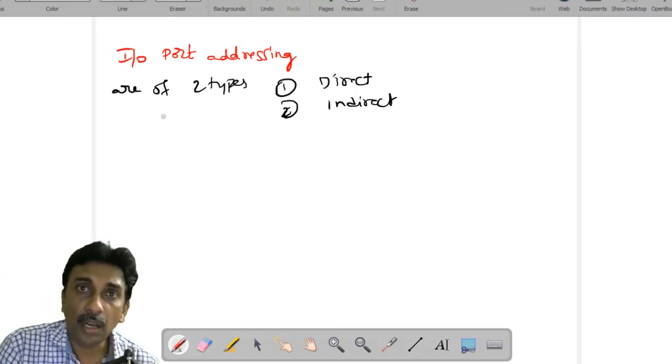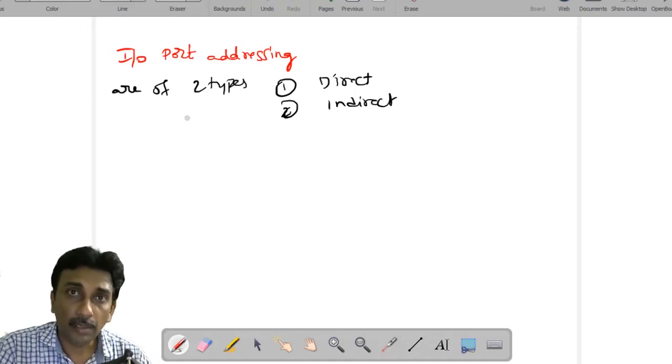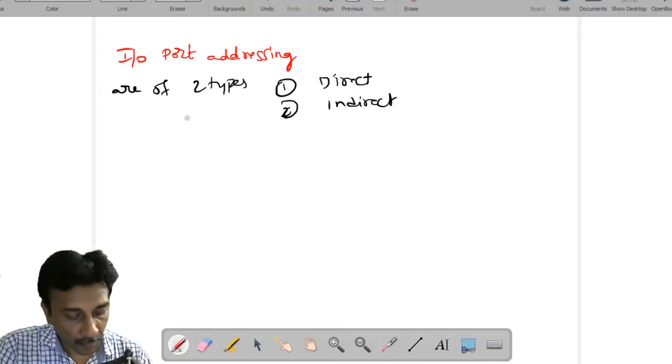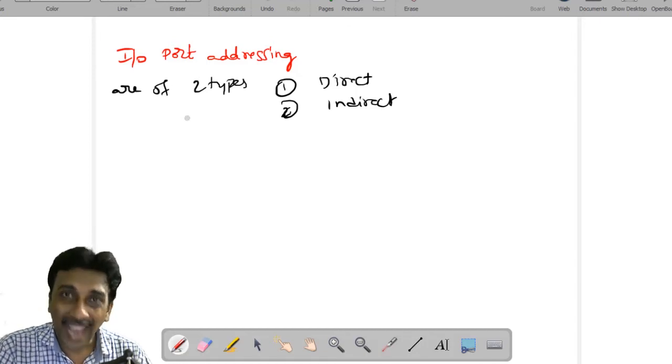So in direct addressing mode, in general the port may be 8-bit. So 2 power 8 means that 0 to 255, the port numbers will be allocated.